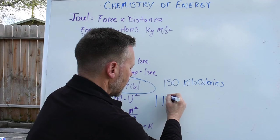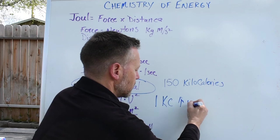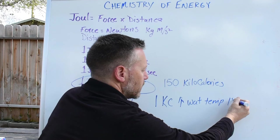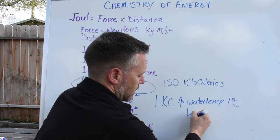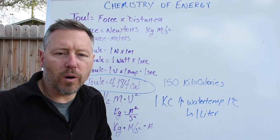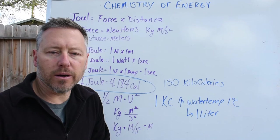So one kilocalorie can raise the water temperature by one liter of water. So if I have one liter of water and I use one kilocalorie, I should be able to raise that water by one degree Celsius.